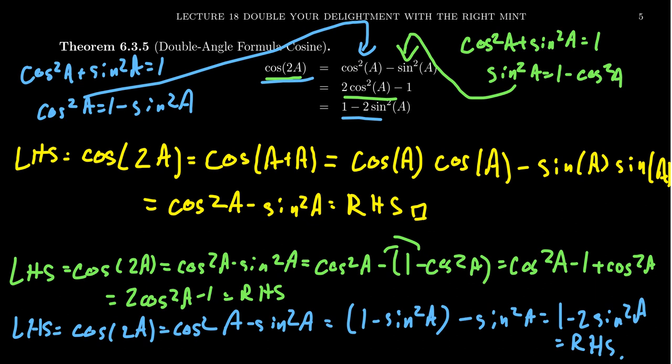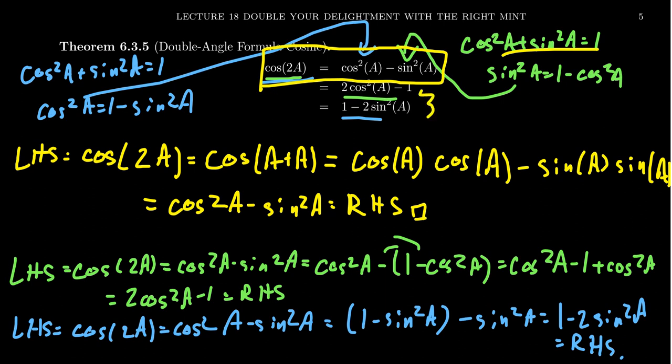Why go through the details of these proofs? As a student in trigonometry, you will be expected to prove trigonometric identities, so it's good to see examples. Also, as these lists of identities get longer and longer — there are three versions of cosine of 2a — you don't have to remember all of them. If you remember the original one and the Pythagorean identity, you can derive the alternative versions whenever you need them.